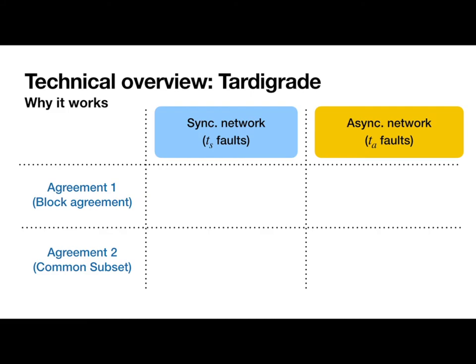So that's how it works. But why does it work? Basically, each agreement phase achieves stronger guarantees in one setting and achieves weaker guarantees in the other. The first agreement phase, which we call block agreement, can be viewed as a form of validated multivalued agreement.